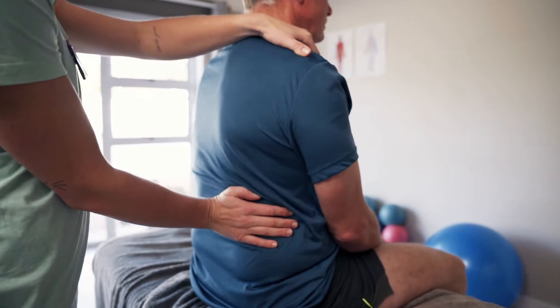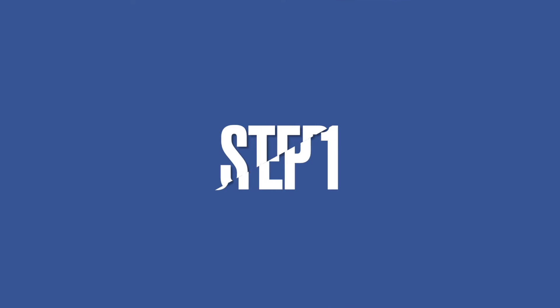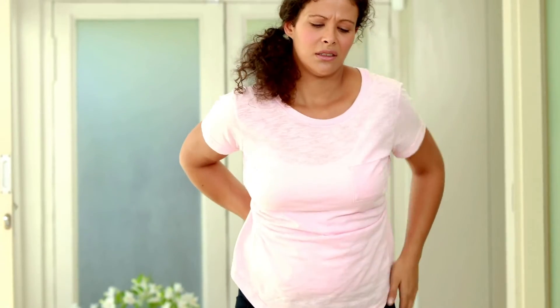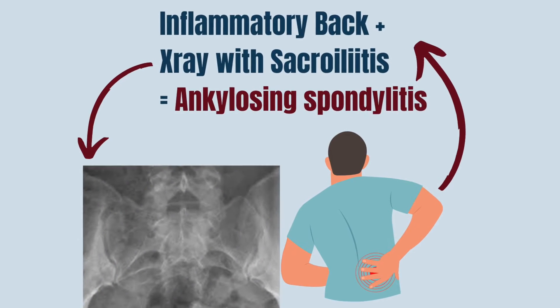When I evaluate a patient with AS, I follow four steps. These steps were proposed in 2013 by the Spondyloarthritis International Society. Step 1: If a patient is presenting with chronic low back pain, with onset before the age of 45 and persistent for at least three months with inflammatory features, then I order labs and an x-ray of the pelvis. If the x-ray is consistent with sacroiliitis, then a diagnosis of AS can be made.